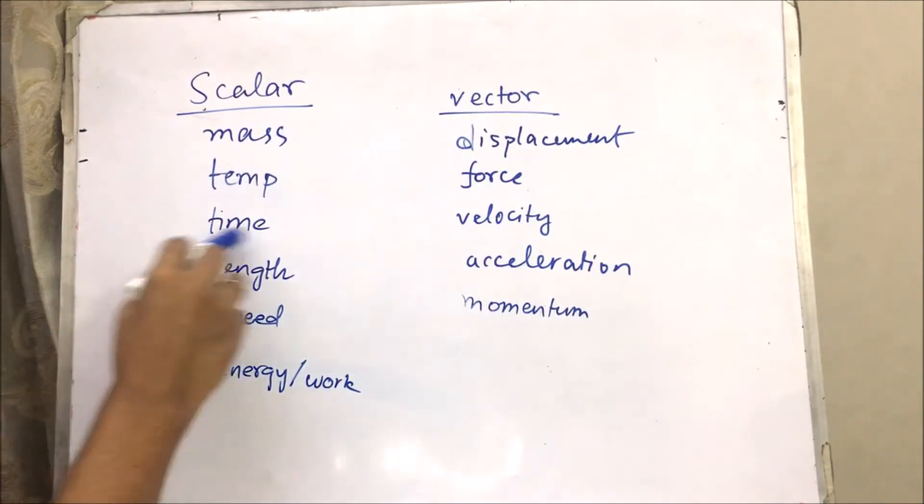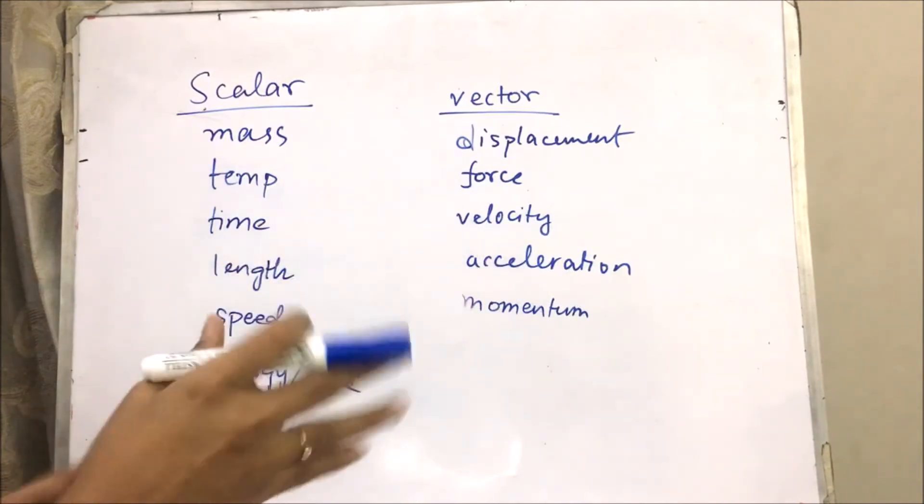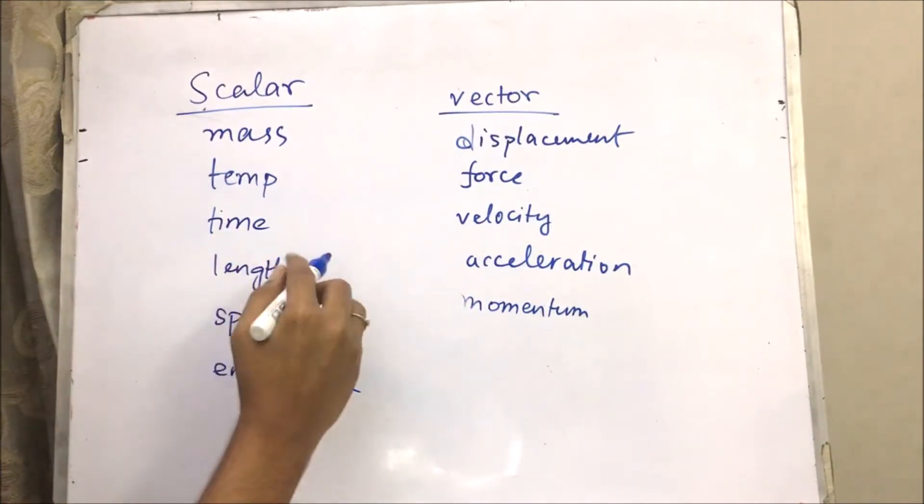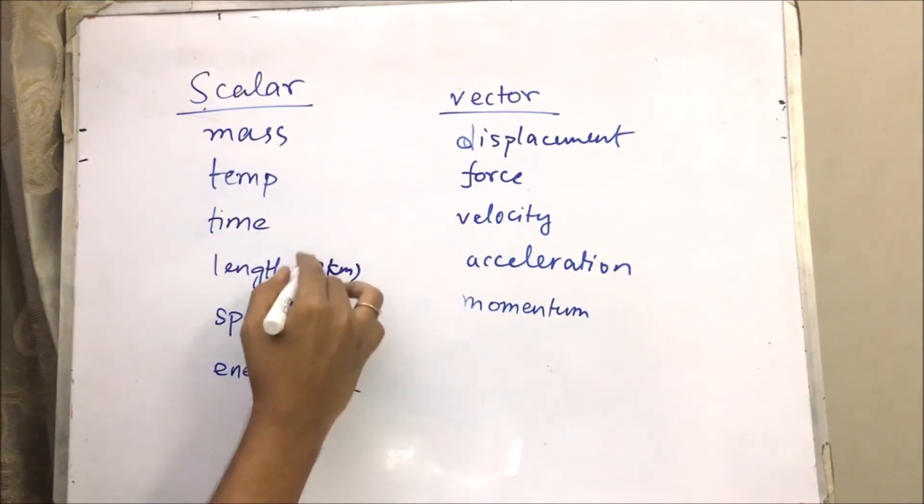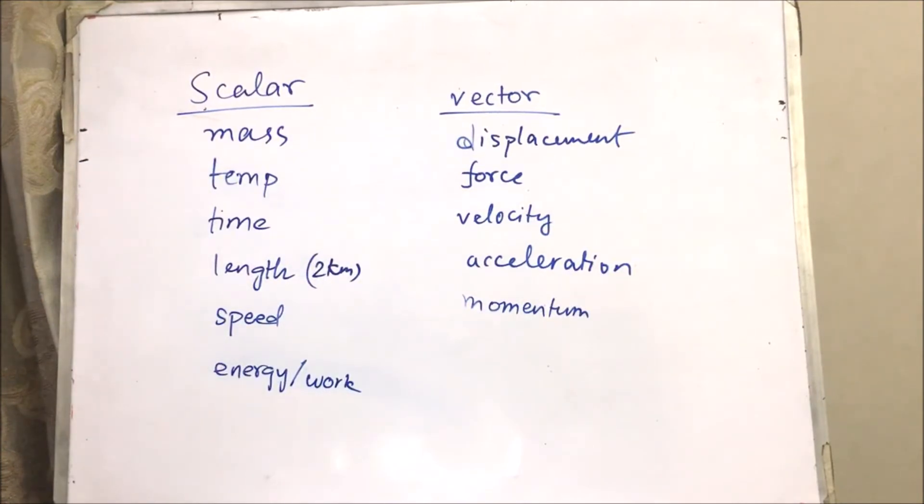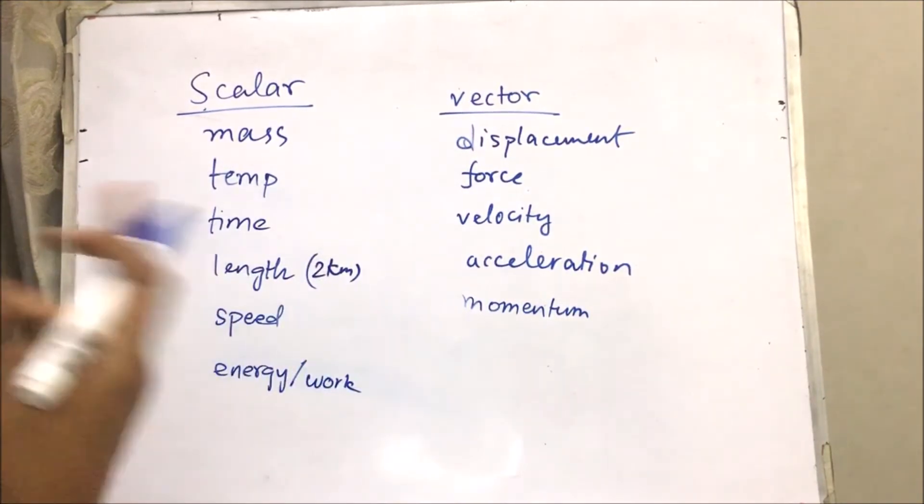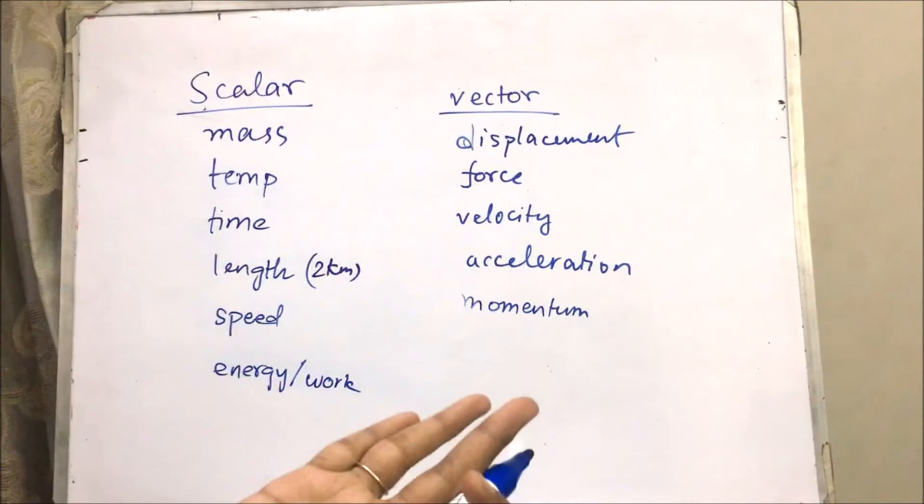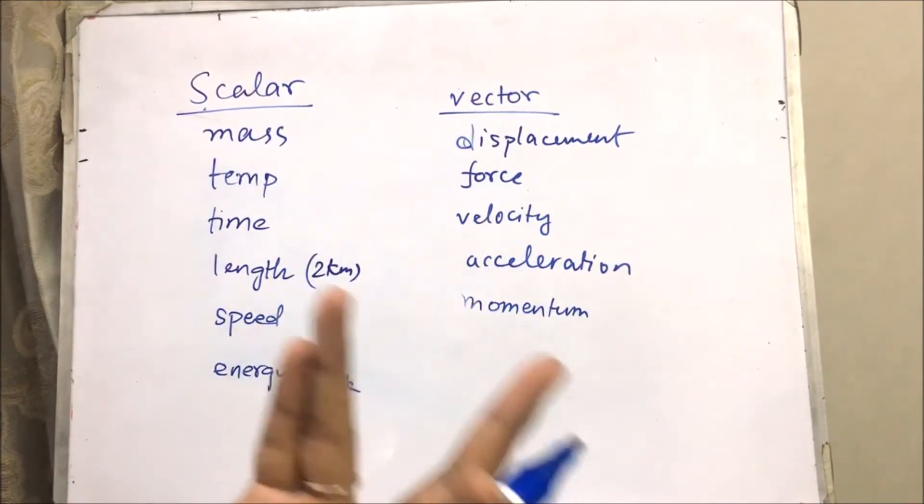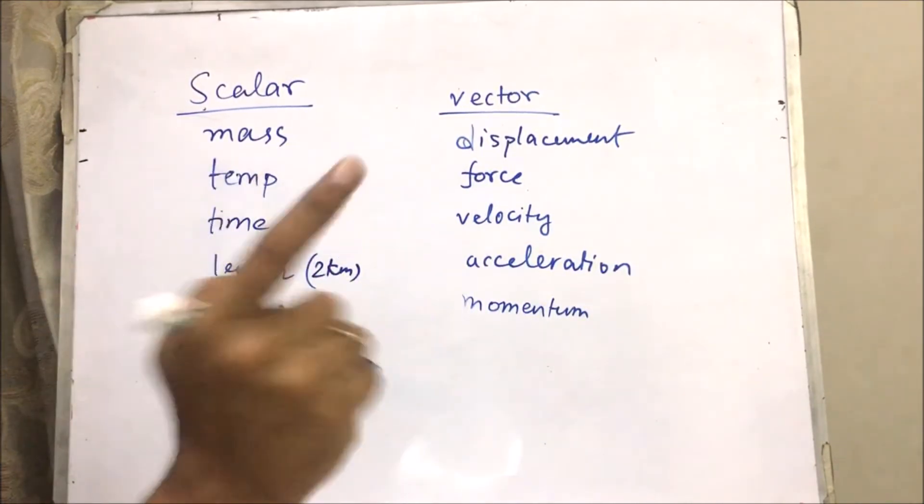So, when you have length and when you assign direction to that length, when you say suppose 2 kilometers, that's a scalar quantity. But if you assign a direction to this length, for example, 2 kilometers to the east. Where did you travel? How much did you travel? I traveled 2 kilometers, scalar.